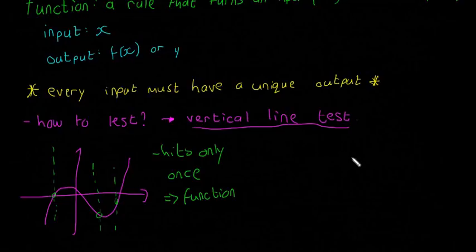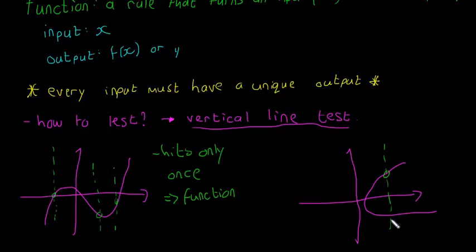Again, if we do that for, say, this curve here. Okay, we got a green line. Do a vertical line test. It hits it twice. Which basically means not a function. Not a function.